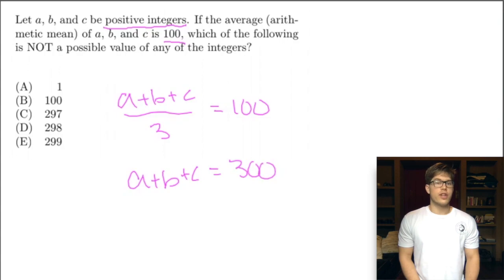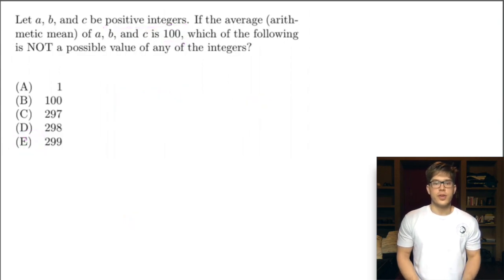What's the question asking us? It's asking us which of the following is not a possible value for any of the integers, given that a, b, and c are all positive. Here we need to look at our answer choices, and E is definitely popping out at me. If one of our values is 299, then even if b and c are both 1, the smallest possible positive integer, then this sum is going to equal 301, which exceeds our limit of 300. Therefore, none of our values a, b, or c could be E, 299. So this must be our answer.